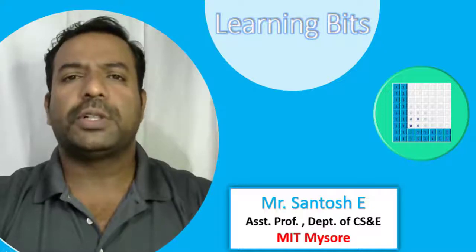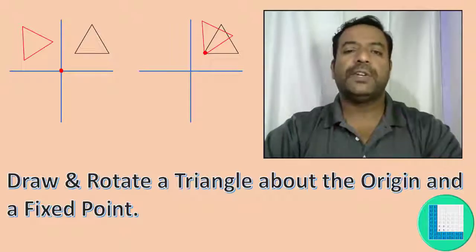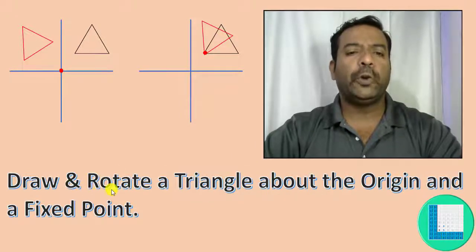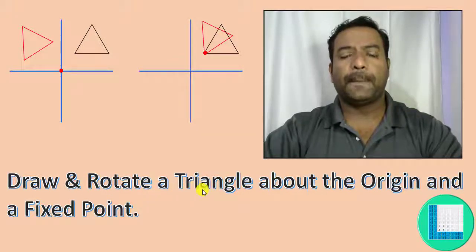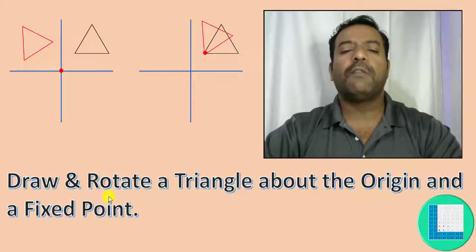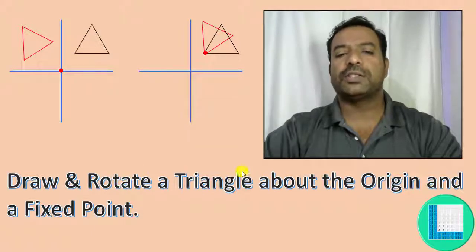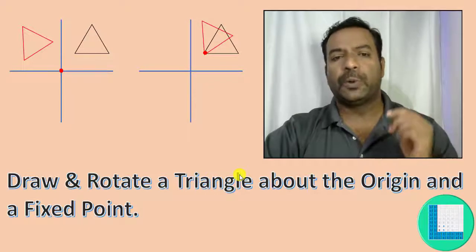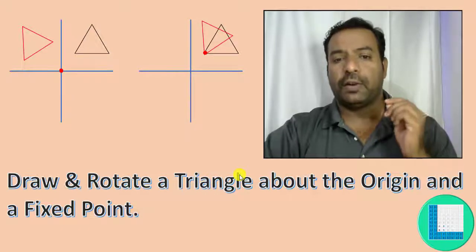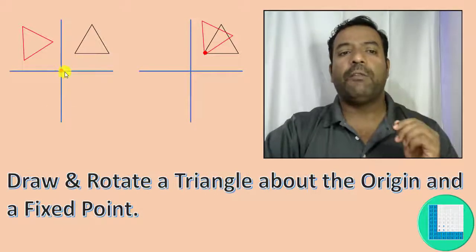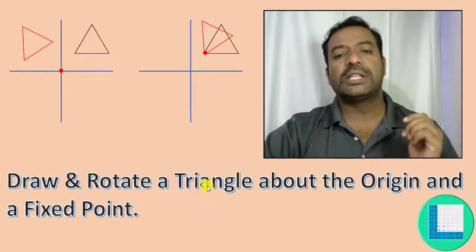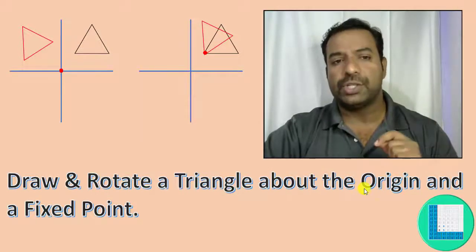Hello everyone, I am Santosh and welcome to my channel Learning Bits. In this video I am going to discuss how we are going to draw a triangle in an OpenGL program and how we are going to rotate it. By default in an OpenGL program the rotation will always be at the origin, hence we call this triangle rotation about the origin.